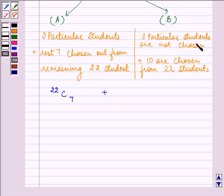Plus here no student is selected, so there is no combination, whereas 10 students are chosen from the batch of 22. This is our total ways of choosing the excursion party. That will be 22C7 plus 22C10.